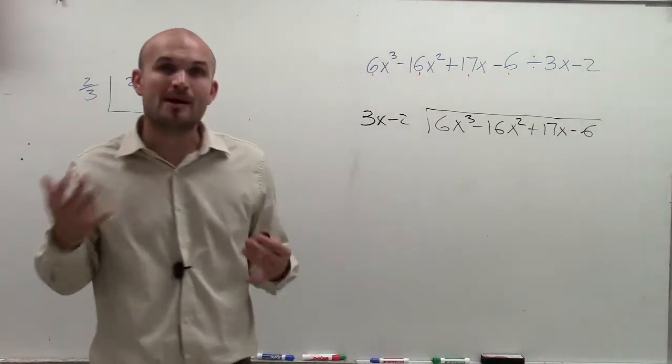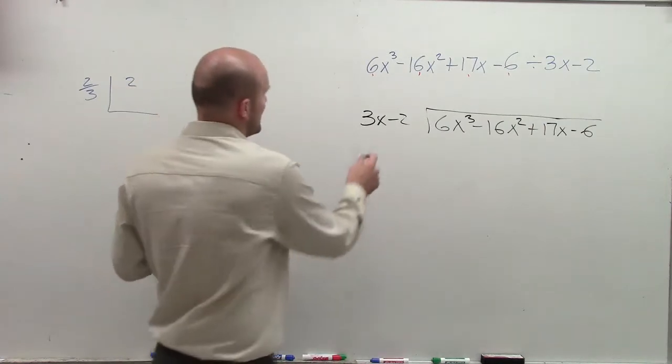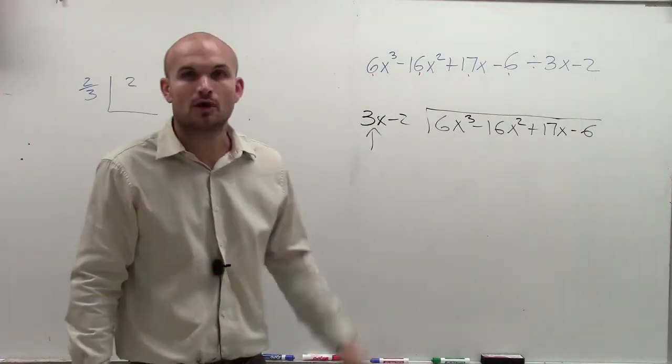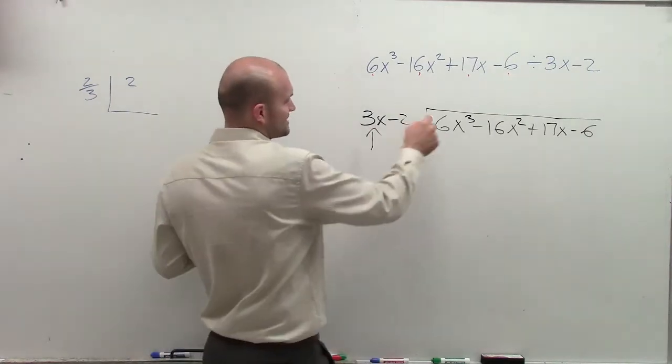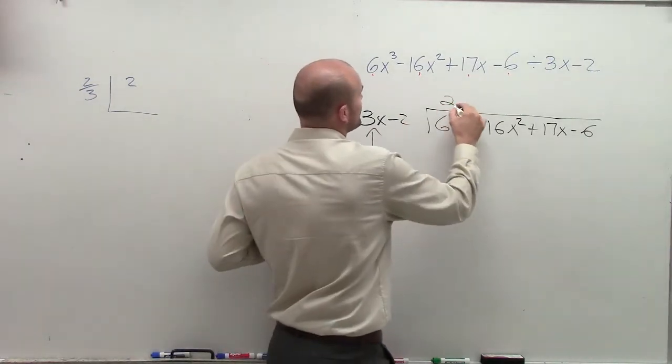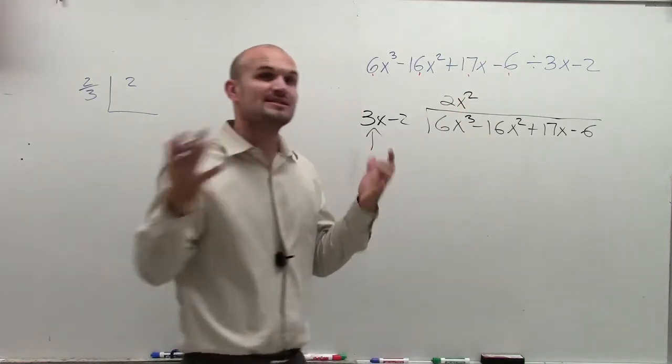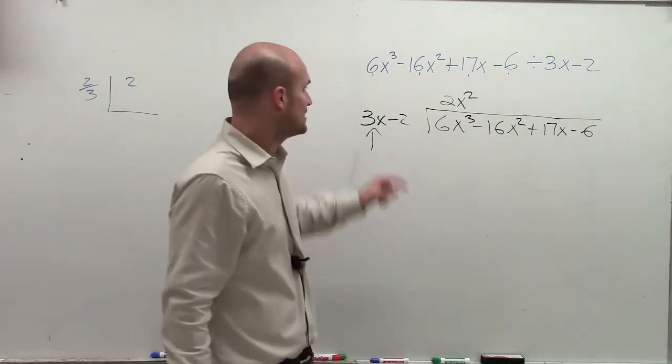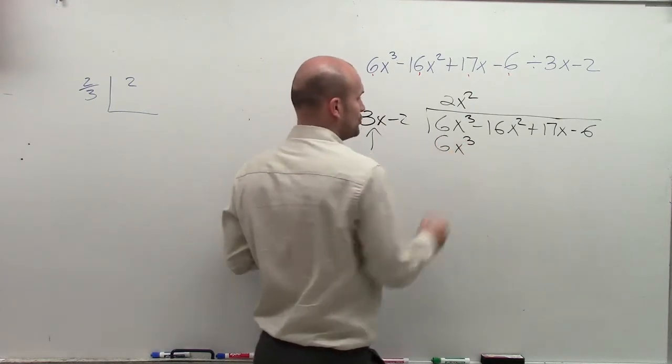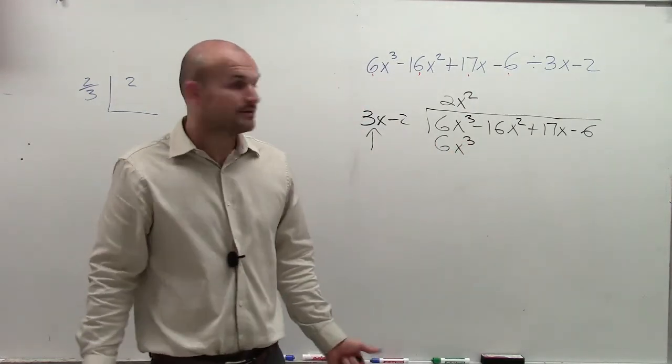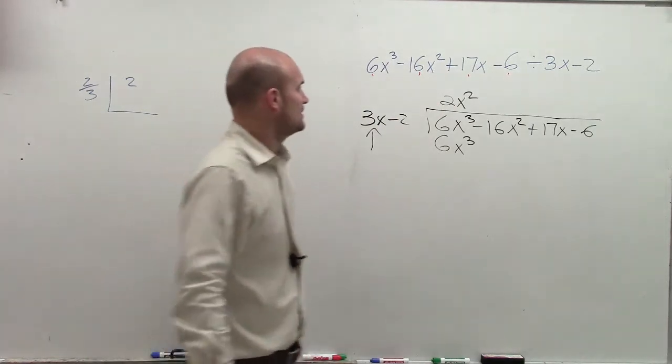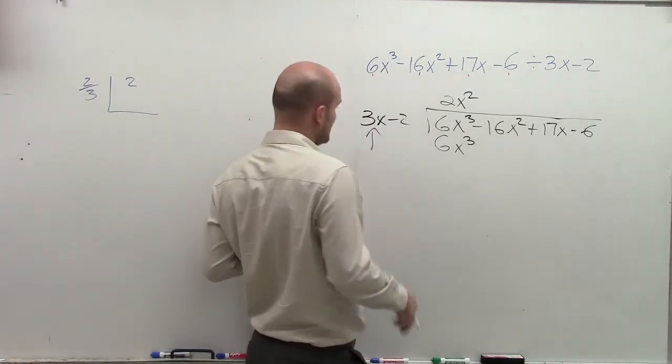So here we go. We're going to set up like a long division problem. Remember, when using long division, we're only going to take the first term of our divisor and divide it into our dividend. So I say, 3x, does that divide into 6x cubed? And you say, yes, it does.